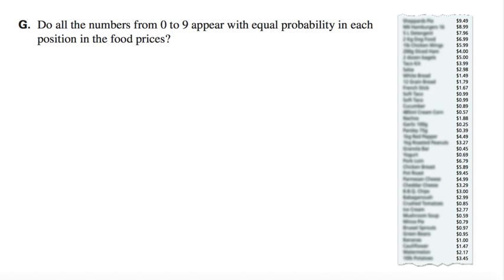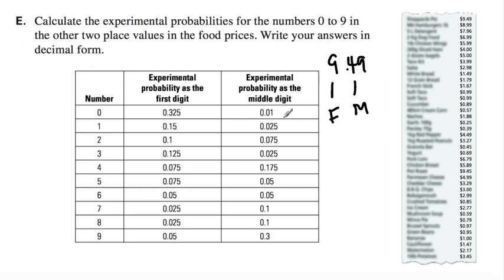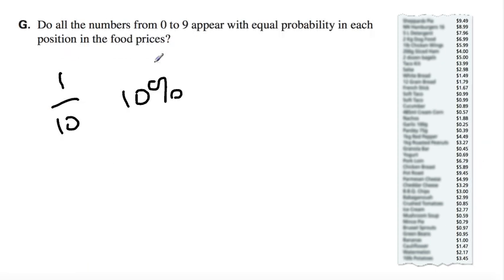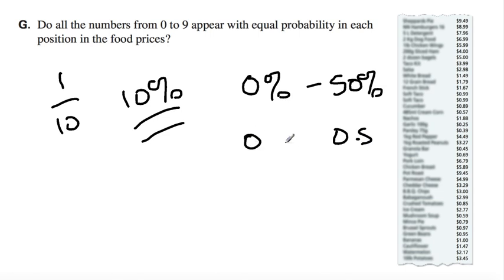Part G: do all the numbers from 0 to 9 appear with equal probability in each position of the food prices? Again, that is not the case. If all the digits appear the same, it's going to be 1 in 10, 10%. And as we went through all the data, that was not the case. In both the experiments we ran, not the case. So the question is, did the numbers come up frequently at 10% frequency rate? No, it did not. It varied. It varied between 0% to 50%. But you can figure it out. 0, 50%, 0.5, 0. And there you have it. 0.5 is a decimal.